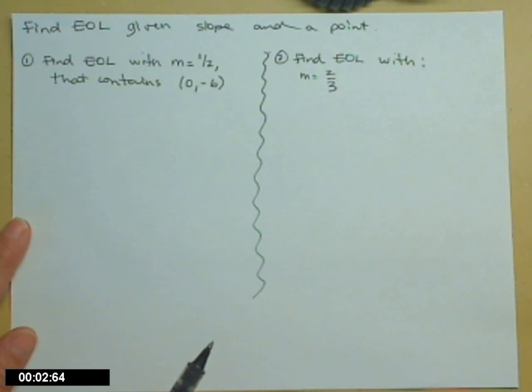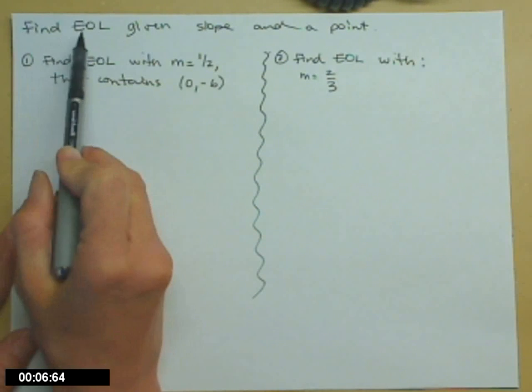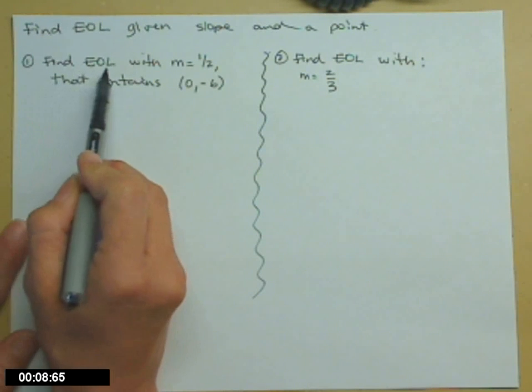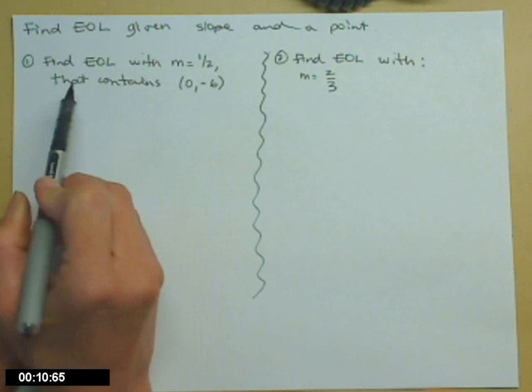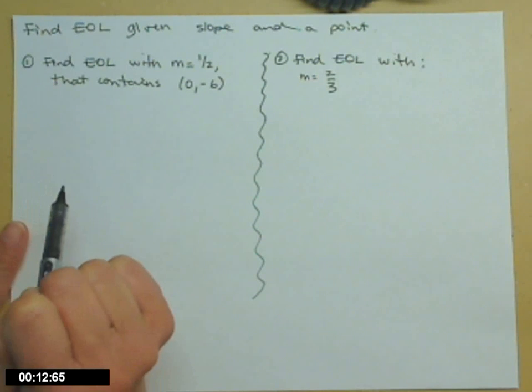Let's find equations of lines if we're given a slope and a point. The first one: find the equation of a line (EOL) with a slope of 1/2 that contains the point (0, -6).